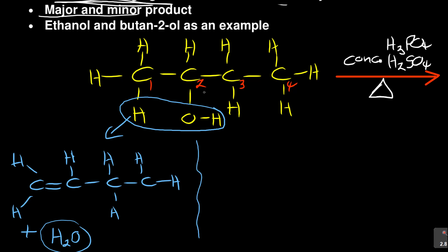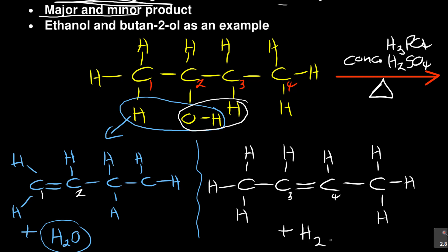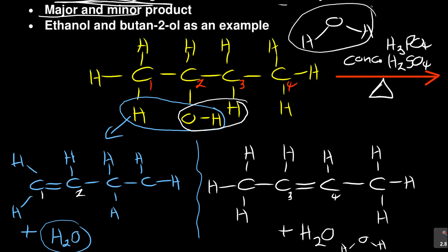Or, instead, if I focus on carbons two and three and eliminate the hydrogen from carbon three — not from carbon one — what do I get? A double bond between carbon two and three. So the second structure has the double bond between carbons two and three, plus H₂O. If they say write the structural formula, you write water as a full structural formula — H-O-H.